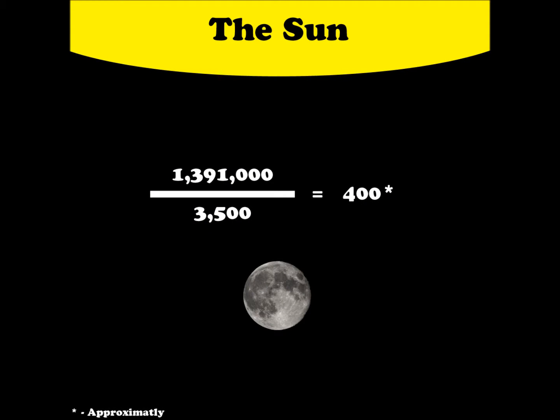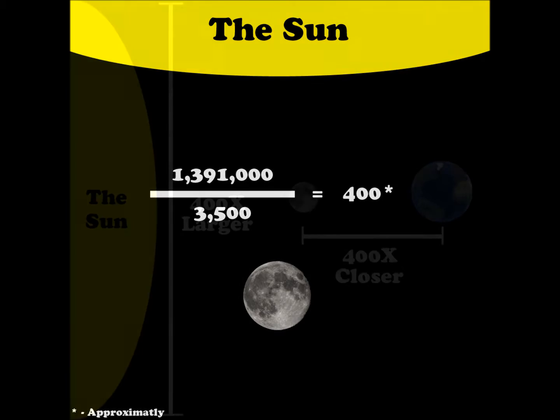When we put that into a calculation, we get 1,391,000 over 3,500, which again divides down to approximately 400. Now we have two answers of the same value, 400, and we can use this to answer our question.